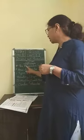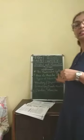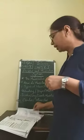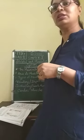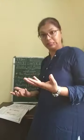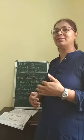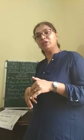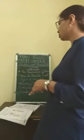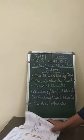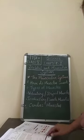Today we will start with the muscular system. As the name suggests, the muscular system is related to the muscles. Like the skeletal system was related to the skeleton — the bones and the movement of bones — same way the muscular system is related to the muscles and the movement of muscles. So, what is the muscular system?